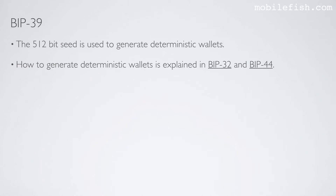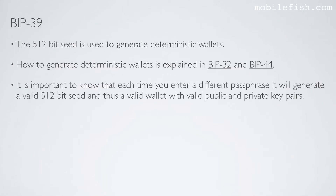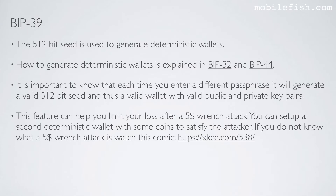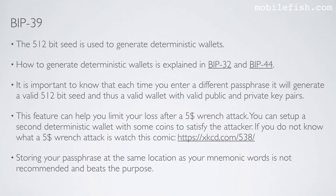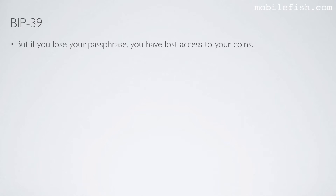If an attacker gets hold of your mnemonic words, a passphrase will prevent the attacker from accessing the private keys. The 512-bit seed is used to generate deterministic wallets, as explained in Bitcoin Improvement Proposals 32 and 44. Importantly, each time you enter a different passphrase it generates a valid 512-bit seed and thus a valid wallet with valid public and private key pairs. This feature can help you limit your loss after a so-called 5-dollar wrench attack — you can set up a second deterministic wallet with some coins to satisfy the attacker. Storing your passphrase at the same location as your mnemonic words is not recommended, but if you lose your passphrase you have lost access to your coins.